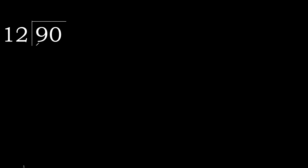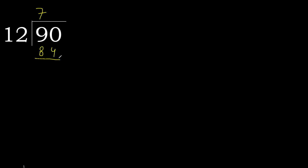90 divided by 12. 9 is less than 12, so we move to 90. 90 is not less than 12, so we find which number 12 multiplied by gives the nearest value to 90 but not greater. 12 multiplied by 8 is 96, which is greater. So try 12 multiplied by 7, which gives 84 — that is not greater.